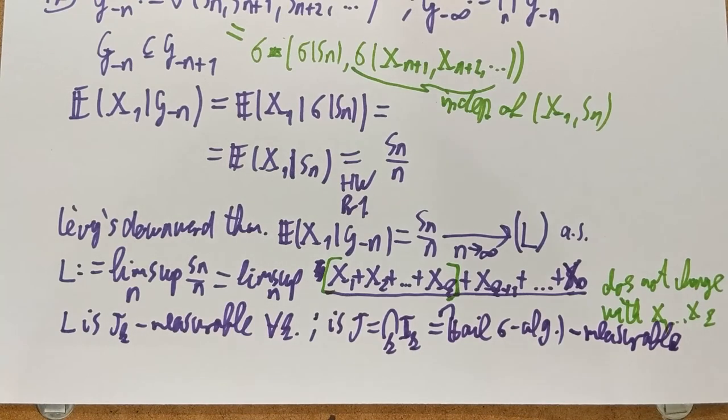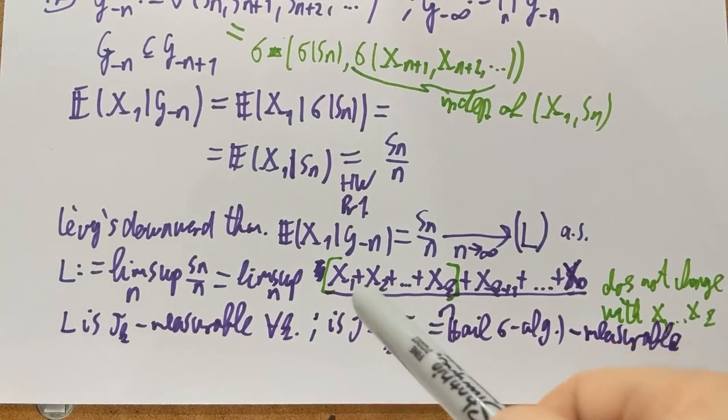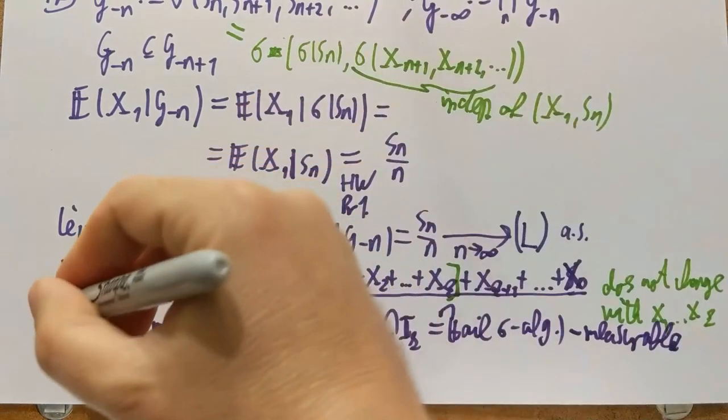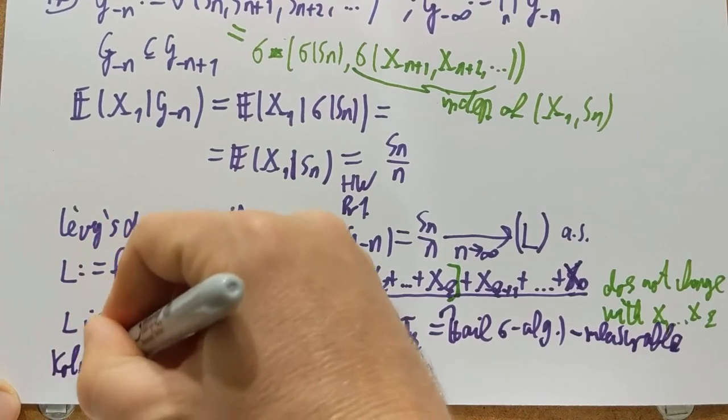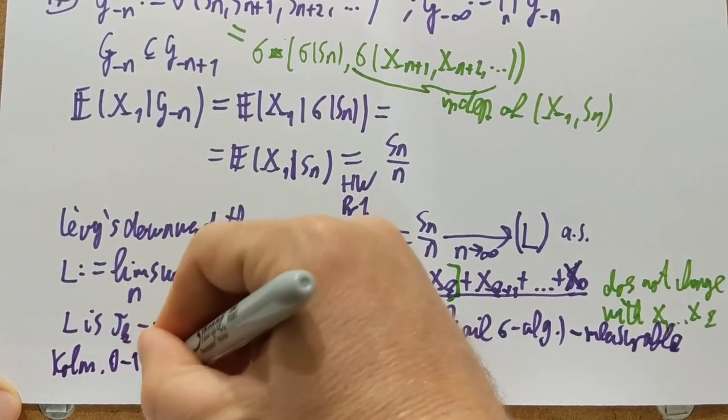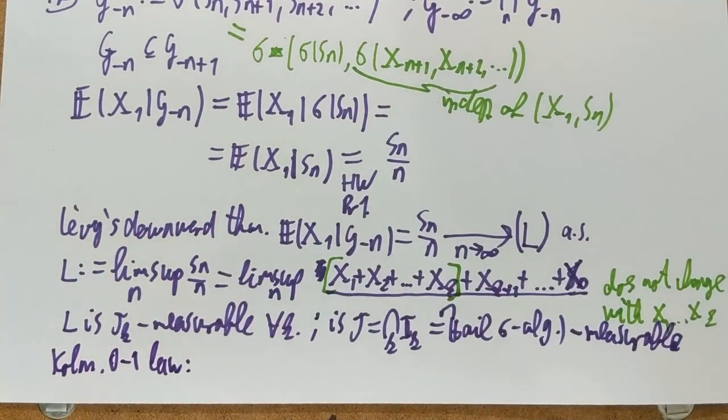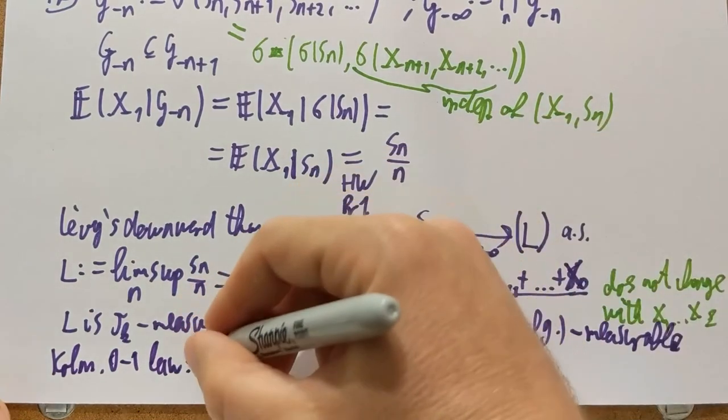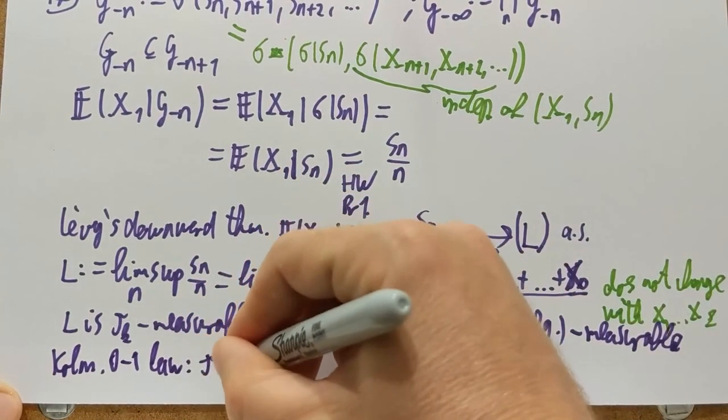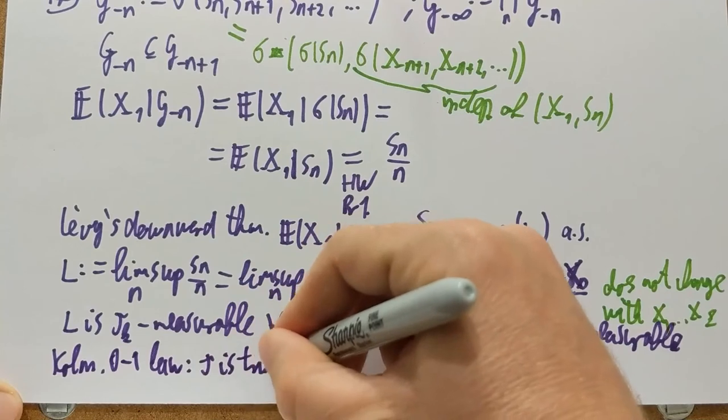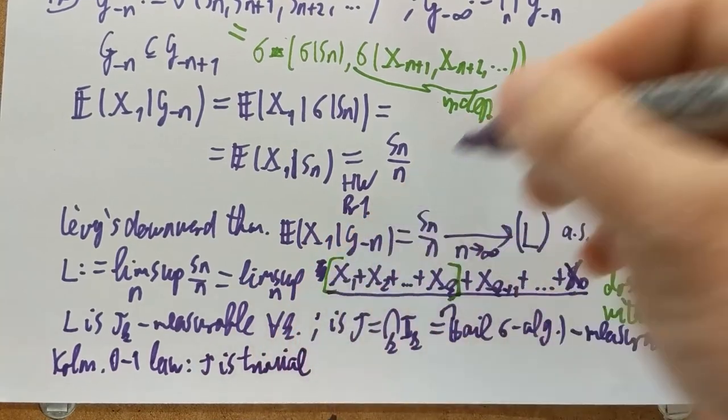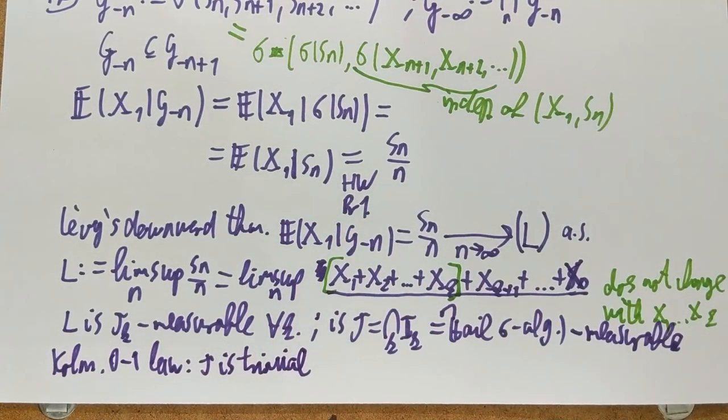The tail sigma algebra is generated from IID random variables. The X_i's are IID. So now comes Kolmogorov's 0-1 law. Which says that tau is trivial. Any event in tau is 0 or 1 probability.